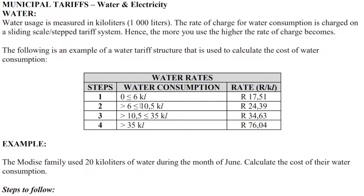If you are using, let's say, eight kilolitres of water, you are not going to be charged R24.39 for all eight kilolitres. It's a sliding scale, which means for the first six kilolitres you are charged R17.51. Then, if you used eight kilolitres for the month, you're left with two kilolitres. Those two kilolitres fall into the next category and are charged at R24.39 per kilolitre.